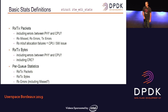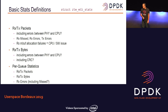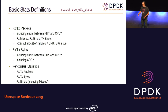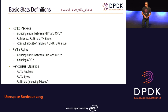Which statistics do we have currently? There is one structure called RTE_ETH_STAT. In this structure, this is very, very basic. We have only counters for the number of packets, for the number of bytes we receive and we send, and we have also a few per-queue statistics for the same, and some errors.